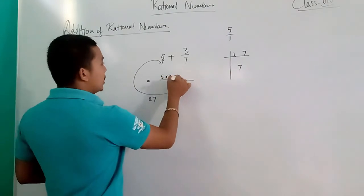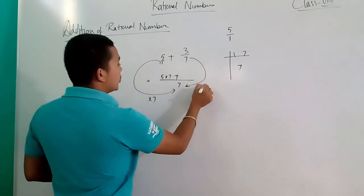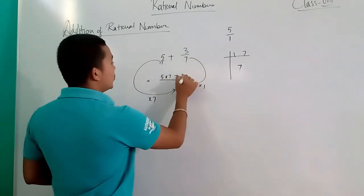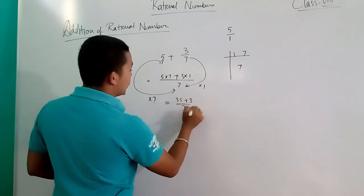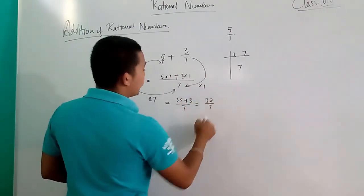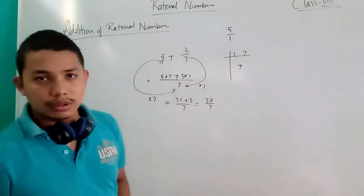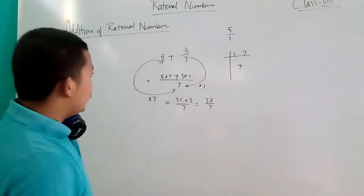That means with 5 we multiply 7. 7 into 1, 5 into 7. Answer will be 35 plus 3 by 7 equal to 38 by 7.